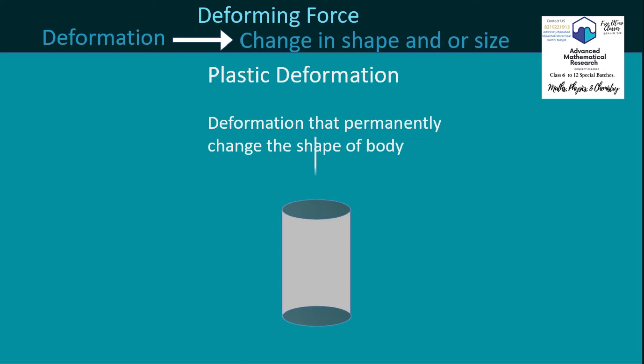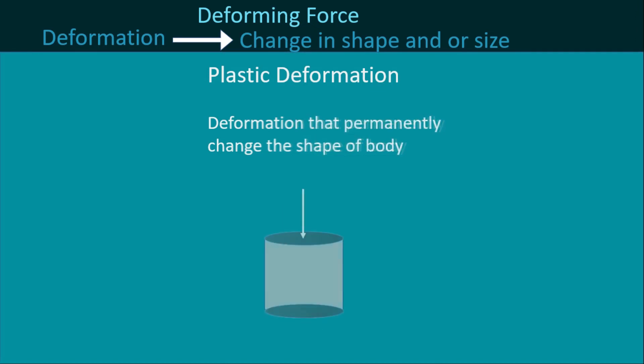Let's consider a solid body. We apply a deforming force — the body gets crushed downward. Here, there is no restoring force. As soon as we remove the deforming force, nothing brings this body back to its initial state. It is permanently deformed. Such type of deformation is called plastic deformation.